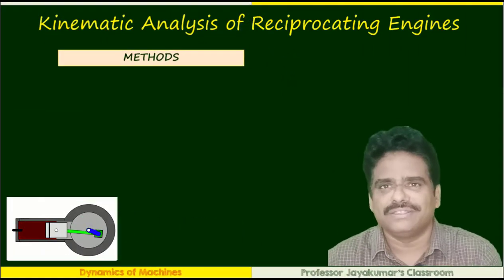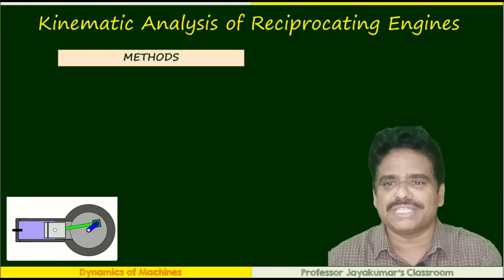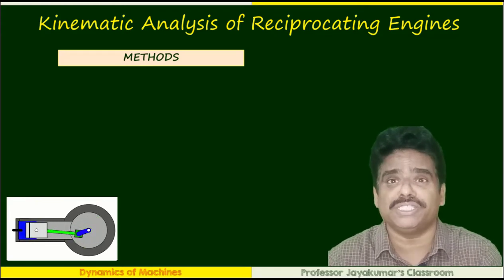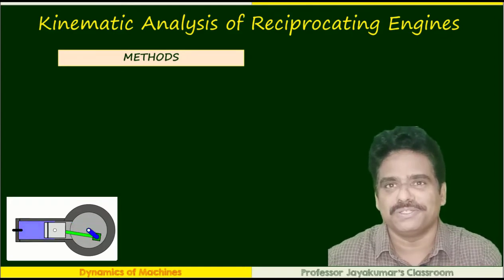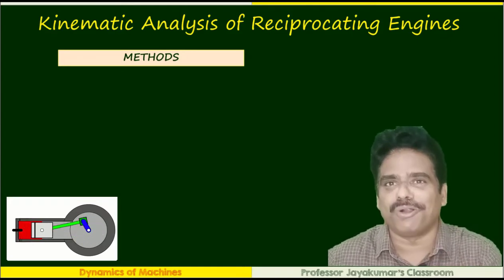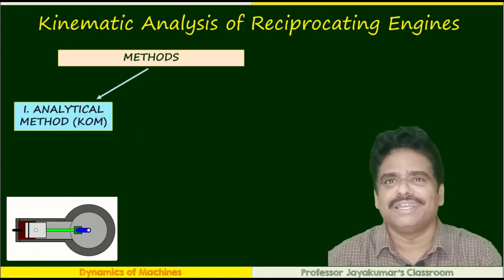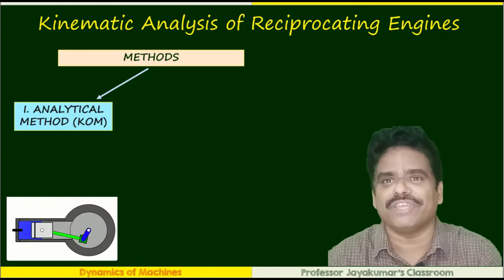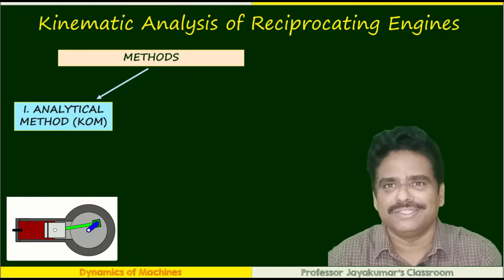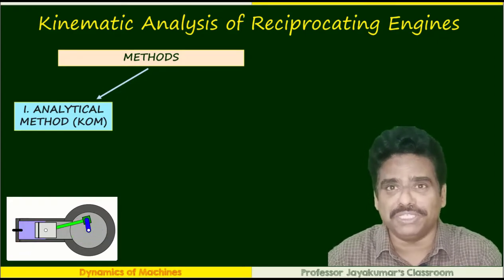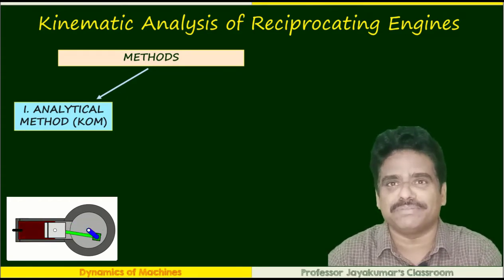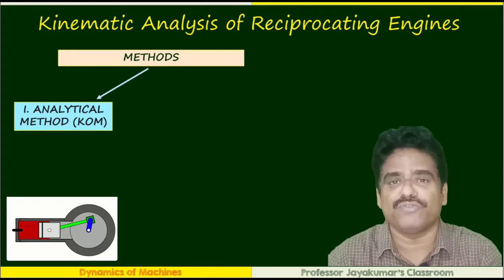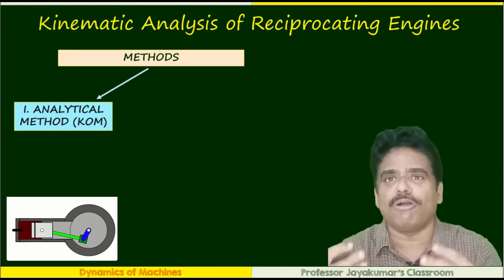There are so many methods available to do this kinematic analysis of reciprocating engines, which you might have already studied under the kinematics of machines course. The two broad methods are analytical method and graphical method. The advantage of the analytical method, especially in the computer era, is that it is easy to program and automate, and we could get the required velocity and acceleration of various parts at all crank positions.